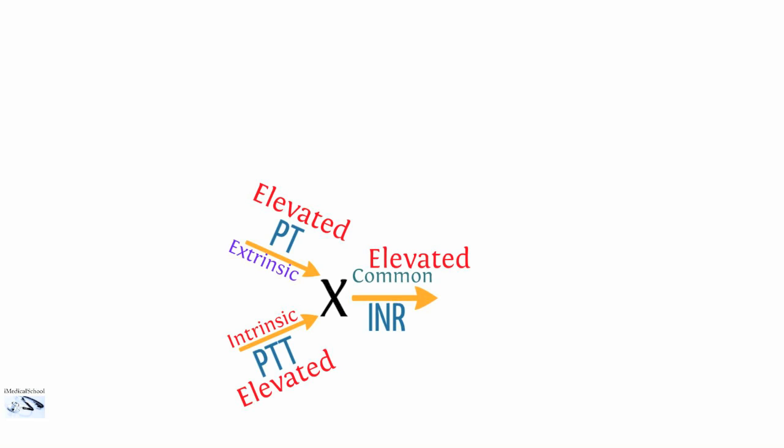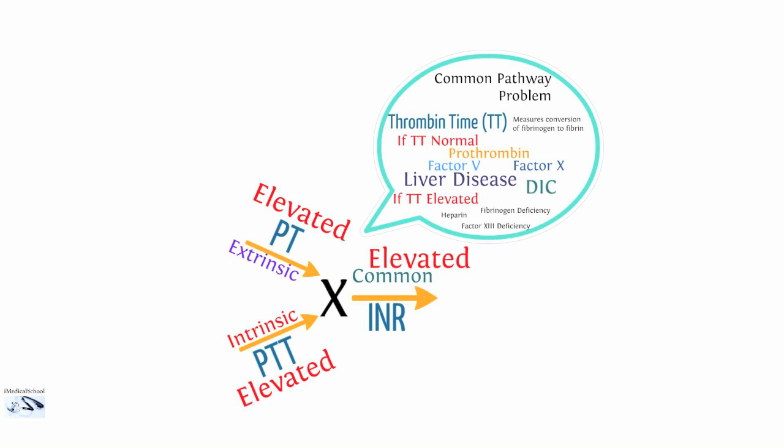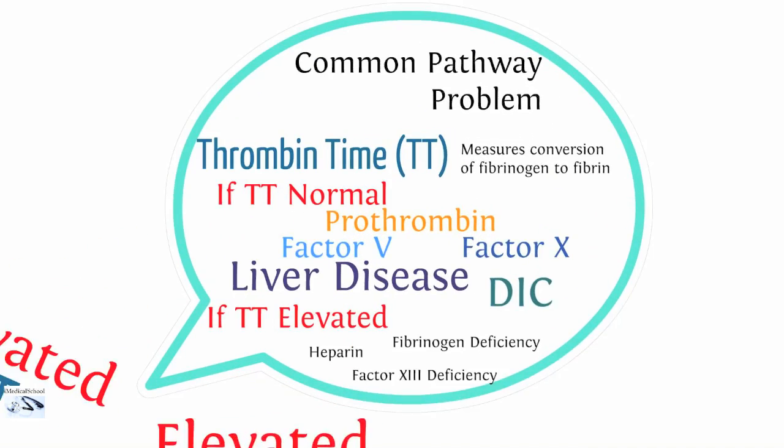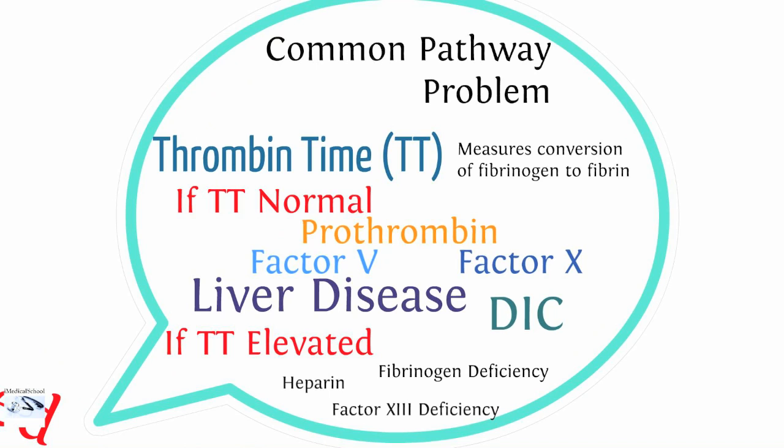In our next scenario, PT is elevated, PTT is elevated, and INR is elevated — a likely common pathway problem. We measure a thrombin time, which measures the conversion of fibrinogen to fibrin. If the thrombin time is normal, possible deficiencies include prothrombin, factor V, factor X, liver disease, and DIC (disseminated intravascular coagulation). If the thrombin time is elevated, possible causes include fibrinogen deficiency, factor X deficiency, and heparin.